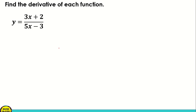First, what we're going to do is to identify our u and v. So the numerator, that will be our u, and the denominator that is our v. So u is equal to 3x plus 2, and v is equal to 5x minus 3.